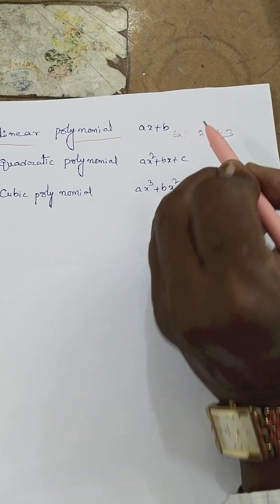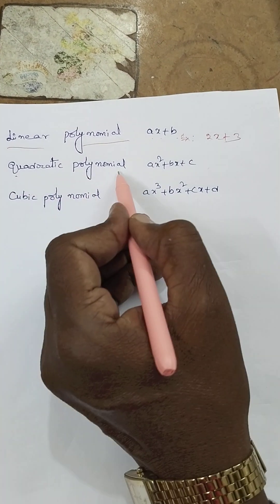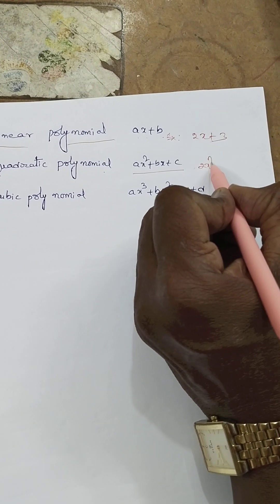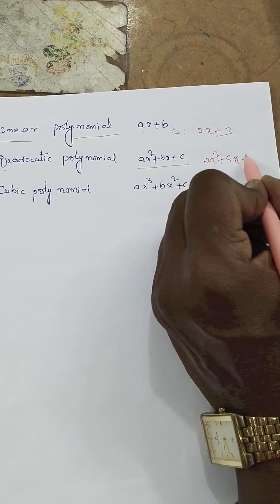2x plus 3. Here quadratic polynomial, 2x square plus 5x plus 6.